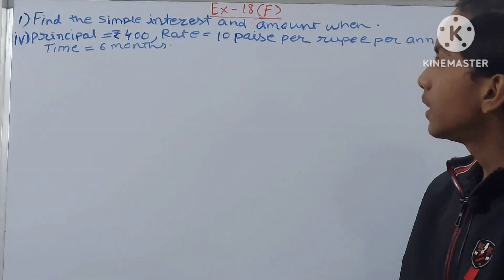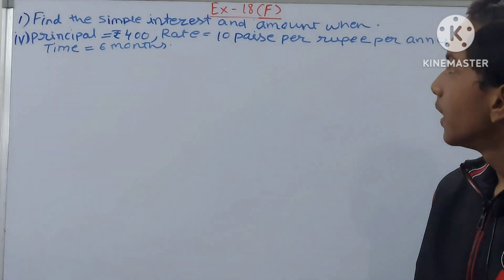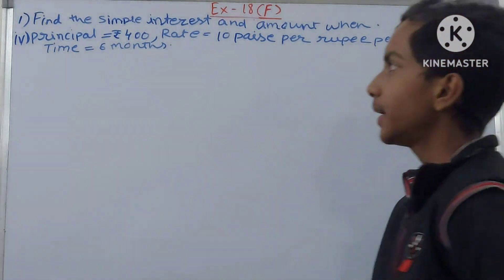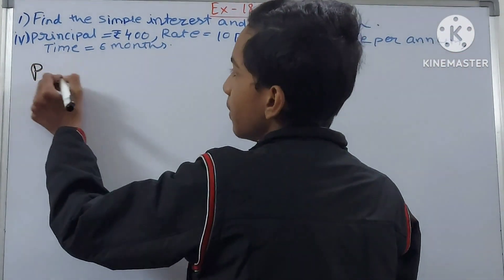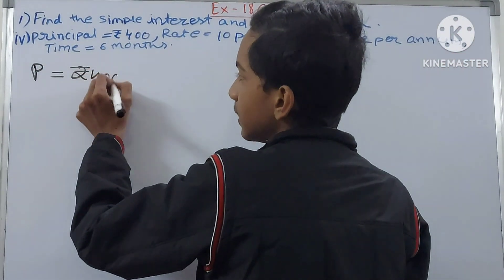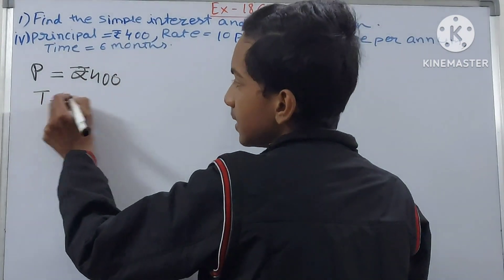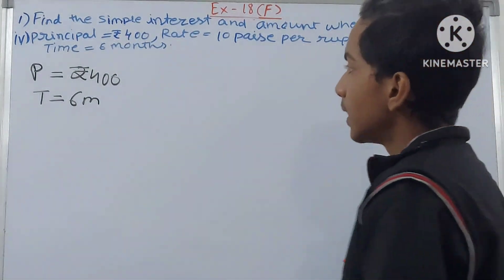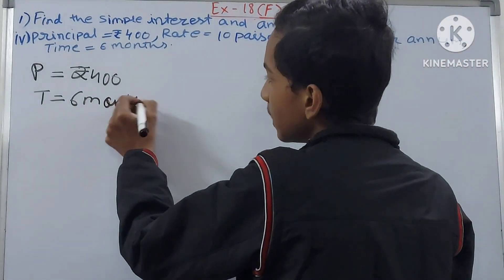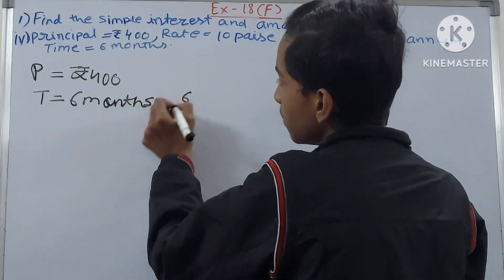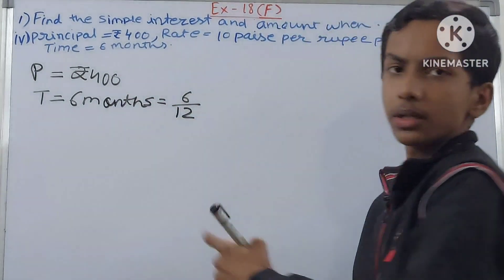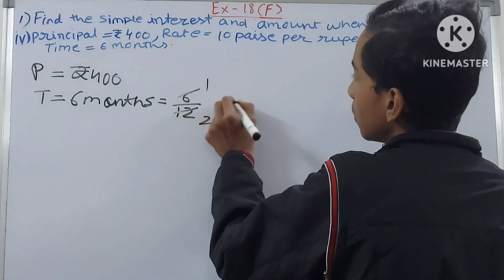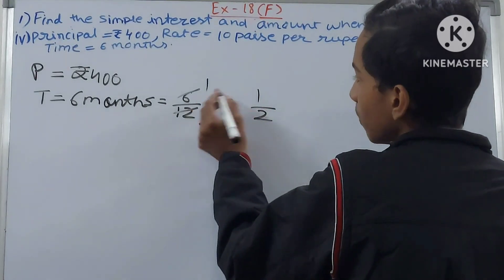The next part: principal = rupees 400, rate = 10 paise per rupee per annum, time = 6 months. Principal is clear. Time in months is converted to years: 6 months = 6 ÷ 12 = 1/2 year.